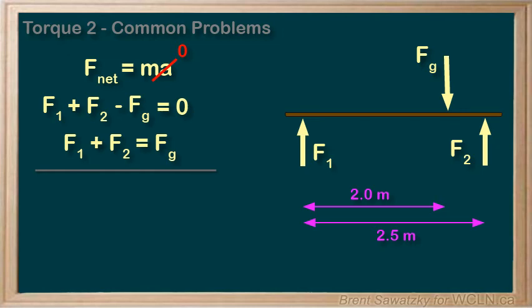For example, if we chose here to be a pivot point, then f1 isn't providing any torque, there's no distance involved. So our torque equation around this point would look like this. Torque net equals, well, 2.5 meters times f2, and that's counterclockwise, so positive.